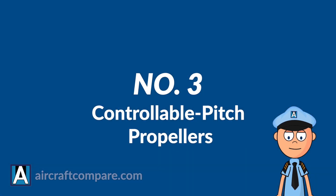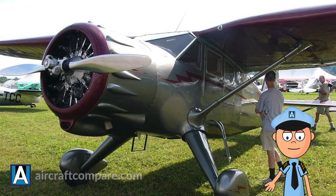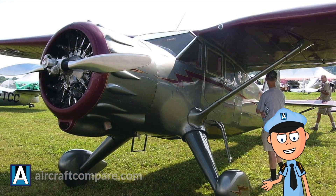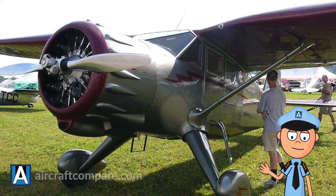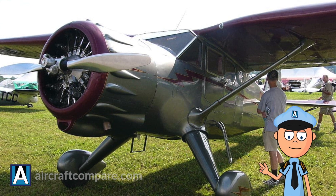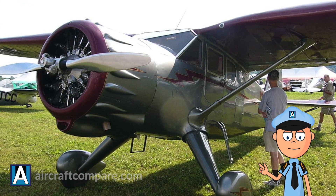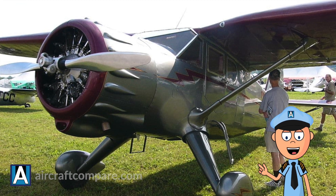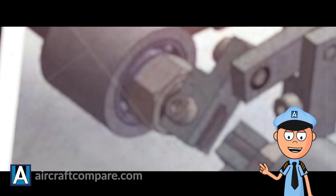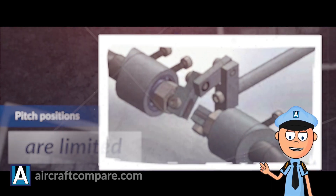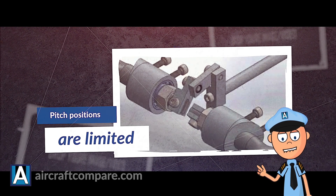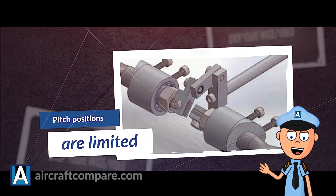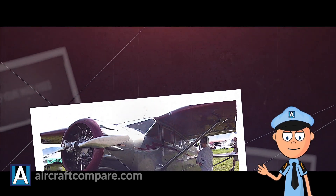Number 3: Controllable Pitch Propellers. As the name suggests, the blade pitch or angle of a controllable pitch propeller can be changed during flight while the aircraft propeller is still running. This means that the blade angle of the propeller can be changed to meet flight conditions. However, the number of pitch positions is limited. With controllable pitch propellers, it is possible to attain a particular engine RPM to meet specific flight conditions.